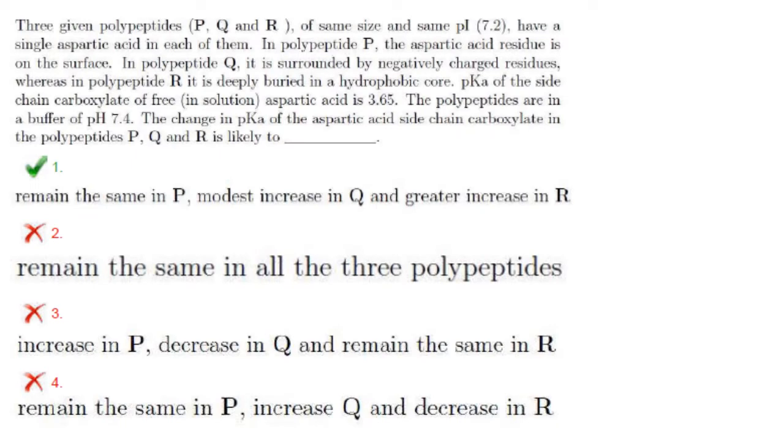Three given polypeptides P, Q, and R of the same size and same pI 7.2 have a single aspartic acid in each of them. In polypeptide P, the aspartic acid residue is on the surface. In polypeptide Q, it is surrounded by negatively charged residues, whereas in polypeptide R, it is deeply buried in a hydrophobic core.